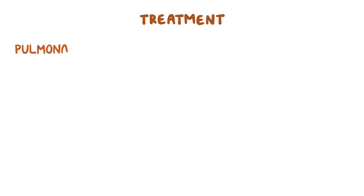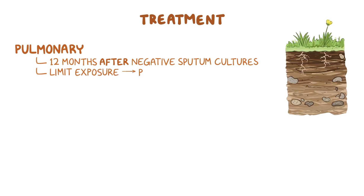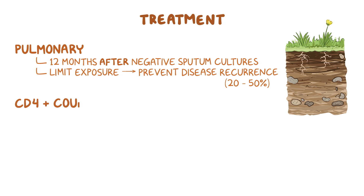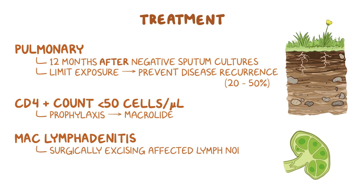For those with pulmonary disease, treatment should be continued for 12 months after establishing negative sputum cultures. Attention should be placed on trying to limit environmental exposure to MAC from aerosolized water and soil in order to prevent disease recurrence, which can occur in up to 20 to 50% of individuals. People with AIDS who have a CD4 count below 50 cells per microliter should receive prophylaxis with a macrolide. Treatment of MAC lymphadenitis is done by surgically excising the affected lymph nodes.